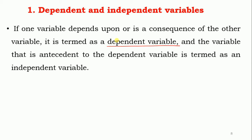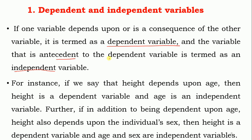If one variable depends upon or is a consequence of another variable, it is termed as a dependent variable. By the name we can understand — if one variable is dependent on another, it's called a dependent variable. The variable that is antecedent to the dependent variable is termed as an independent variable — simply, those variables which are not dependent on any other variable are called independent variables.